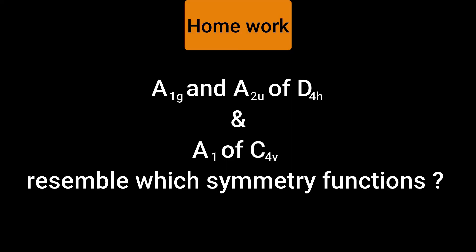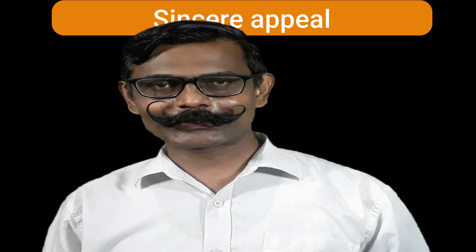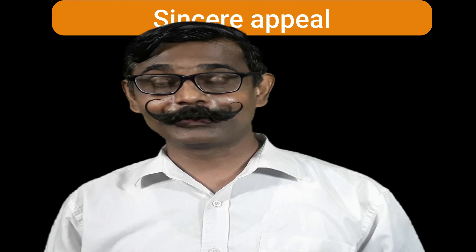As homework, here is a question to test your understanding about correlations in the D4h point group: A1g and A2u — which symmetry functions do these two irreducible representations signify? Write that down. Additionally, these two irreducible representations correlate to the A1 irreducible representation of C4v. Also write down which symmetry functions A1 correlates to.